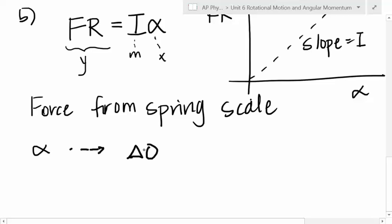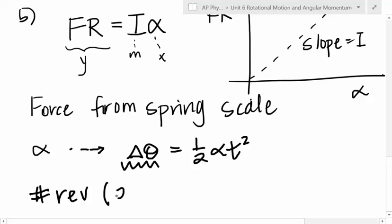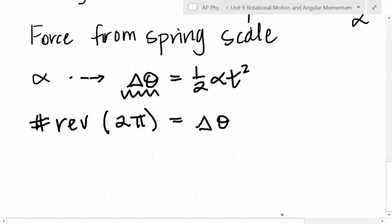So, I need the angular acceleration. Now, to find that, if I use delta theta is equal to one half alpha T squared, I bet I could measure how many revolutions my disc makes. Can you watch something go round and round? Can you count how many times it goes round and round? All right. So, we would count the number of revolutions, multiply that by two pi, and that would be our angular displacement. Can you time that? Can you watch something go round and round and use your stopwatch? So, we're going to time that number of revolutions. And then, we can find the angular acceleration.